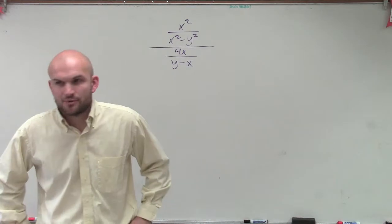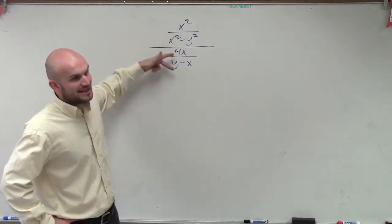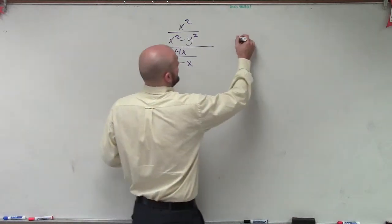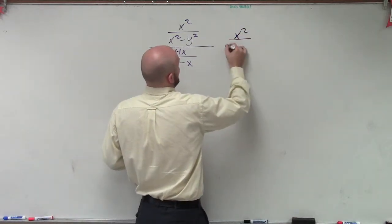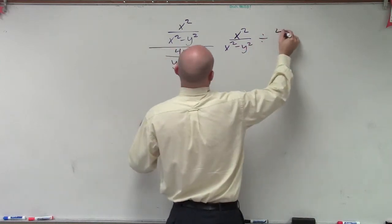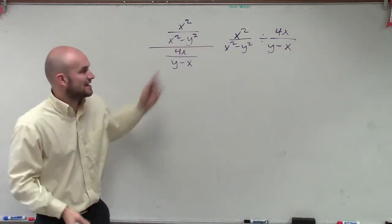But all I want you guys to really understand with this is this is saying this fraction divided by that fraction, right? Okay, it's really just saying x squared divided by x squared minus y squared divided by 4x divided by y minus x. Isn't that the same thing?